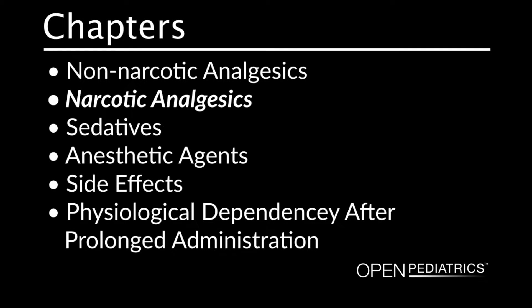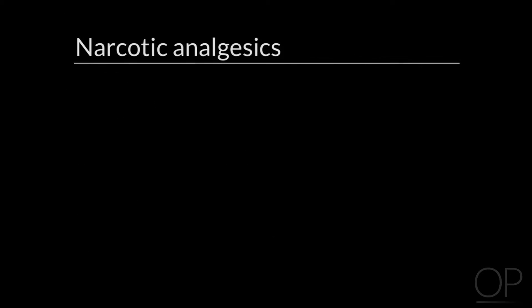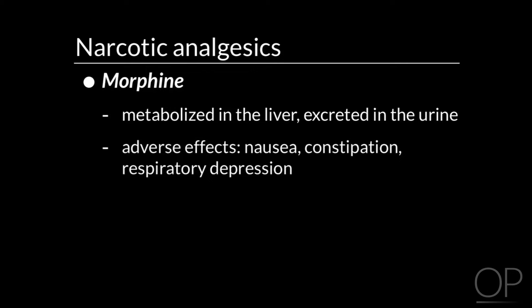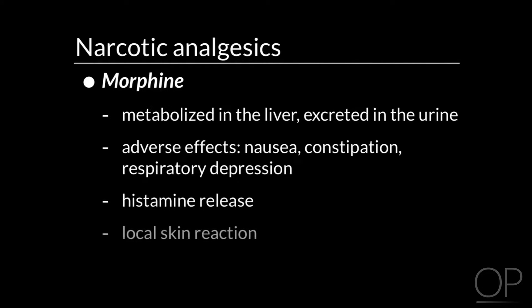Narcotic analgesics. Morphine is a common opioid analgesic used in the cardiac intensive care unit. It is metabolized in the liver and excreted in the urine. Adverse effects include nausea, constipation, and respiratory depression. It may cause a histamine release and local skin reaction during administration.